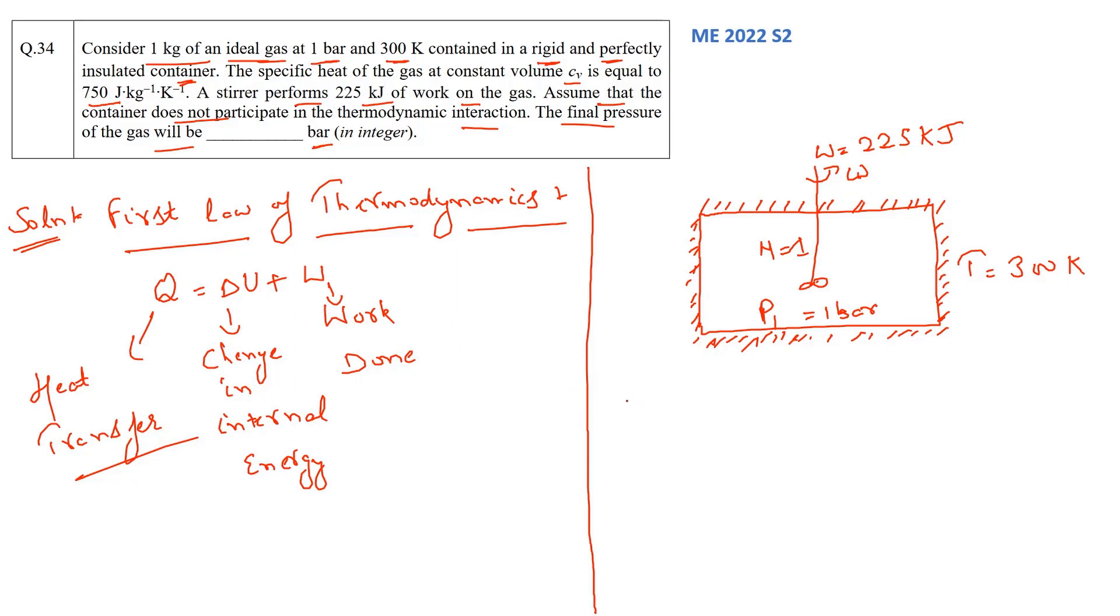Apart from that, we have specific heat at constant volume which is 750 Joule per kg inverse Kelvin inverse, so if you try to convert into kJ it will become 0.75 kJ per kg per Kelvin. Mass is already 1 kg, P1 is given as 1 bar, P2 is what we have to find, and work is done on the system so it would be minus 225 kJ.